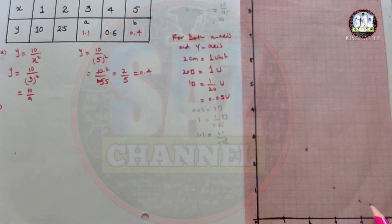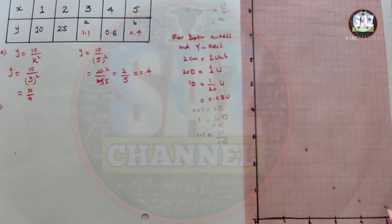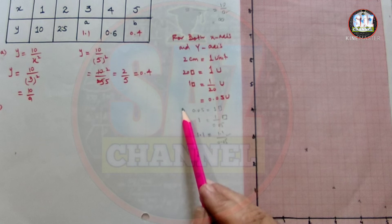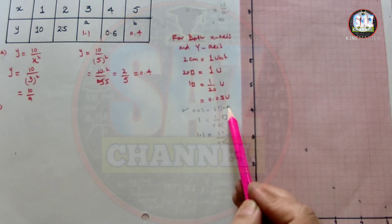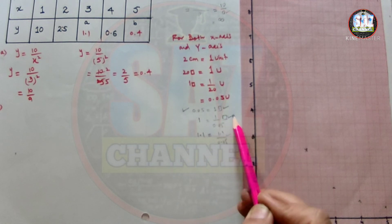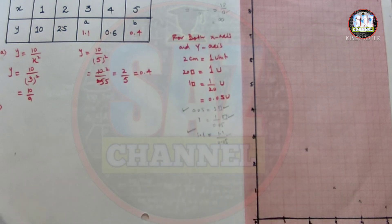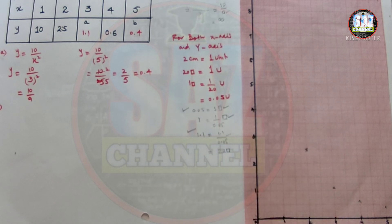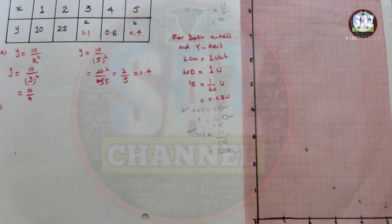For (5, 0.4): 0.4 ÷ 0.05 = 8 blocks, so count 5, 6, 7, 8 blocks up. To summarize the method: if the value is 0.05, use 1 block; if the value is 1, use 1/0.05 = 20 blocks; if the value is 1.1, use 1.1/0.05 = 22 blocks. All points are now marked.